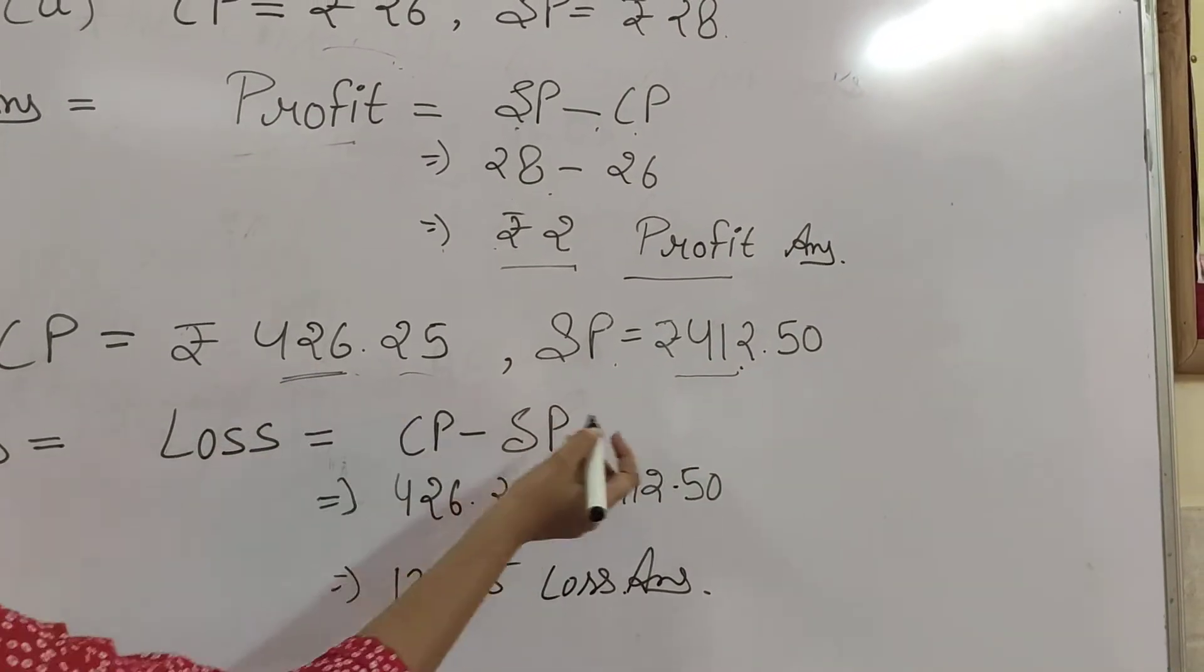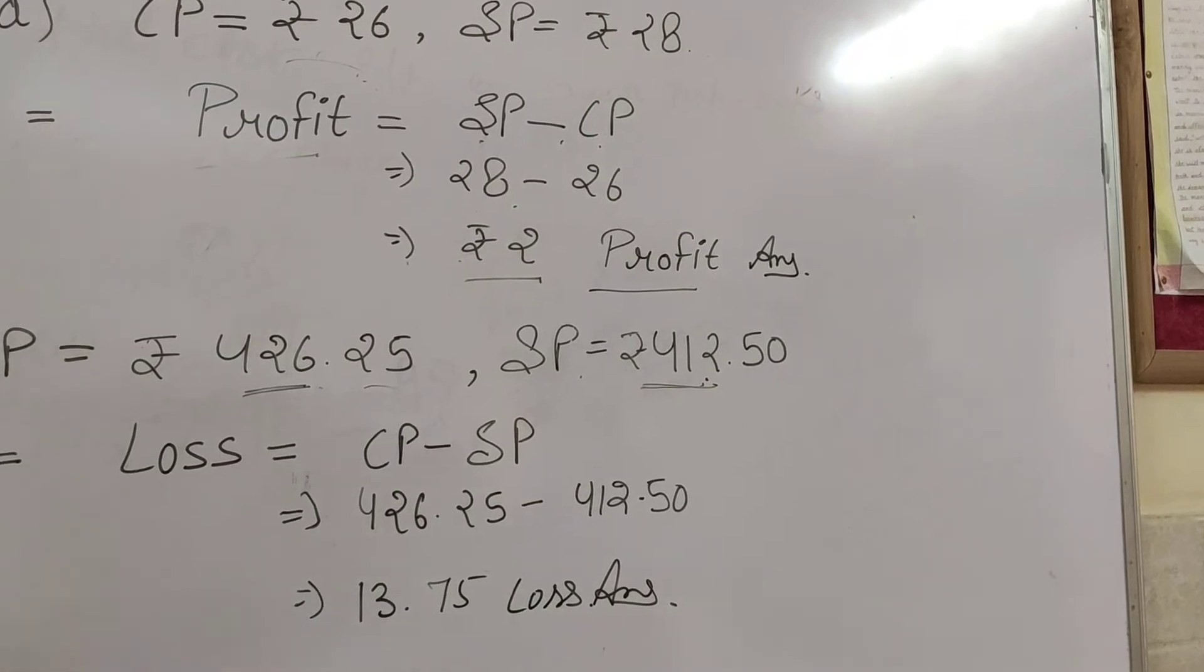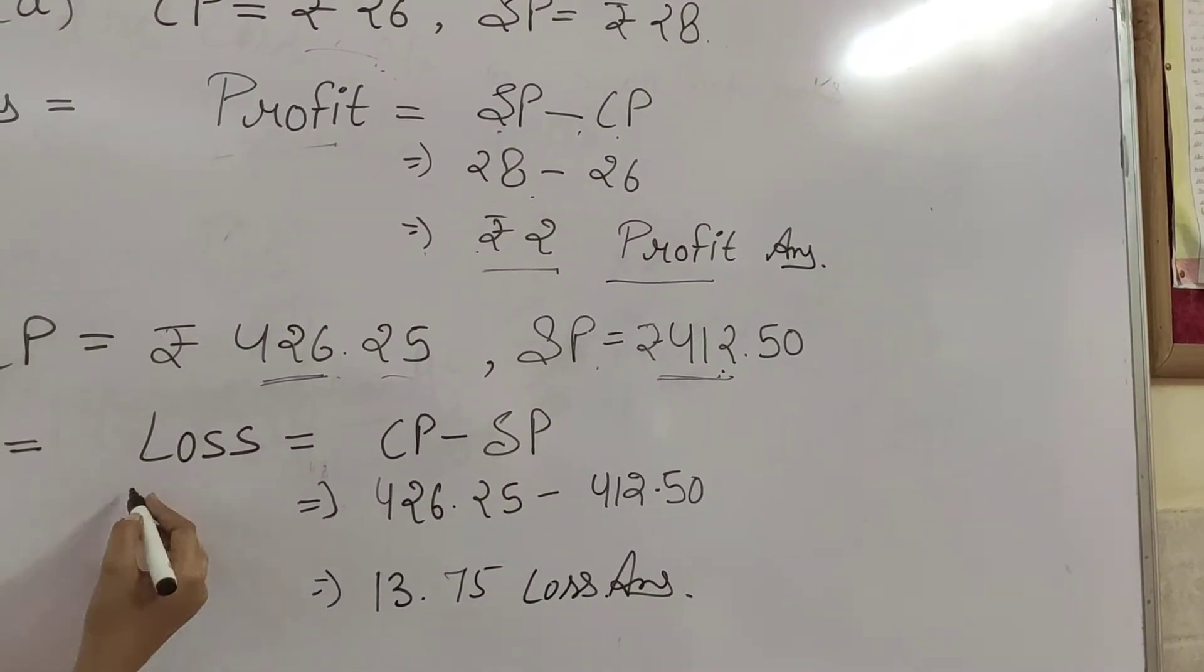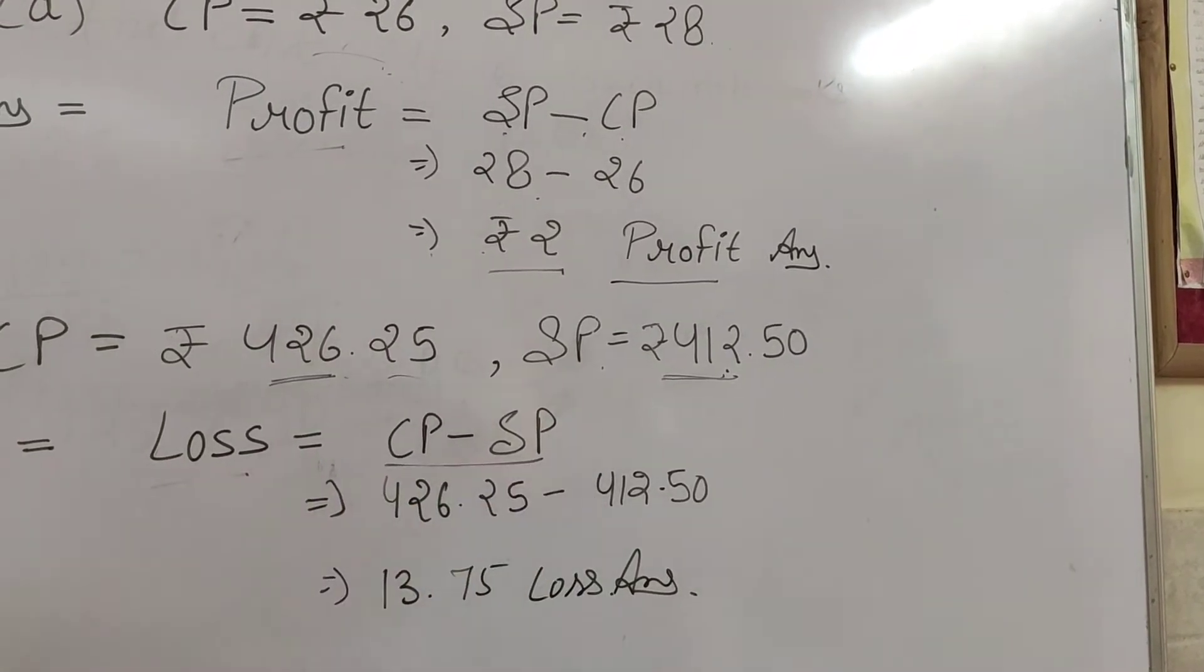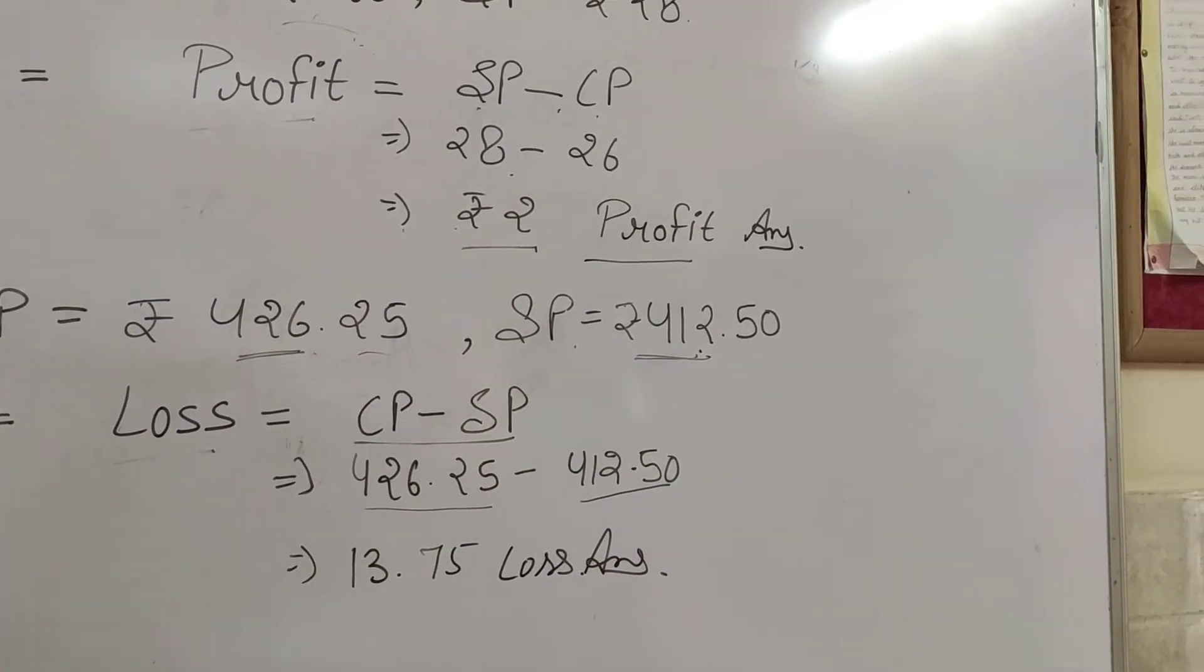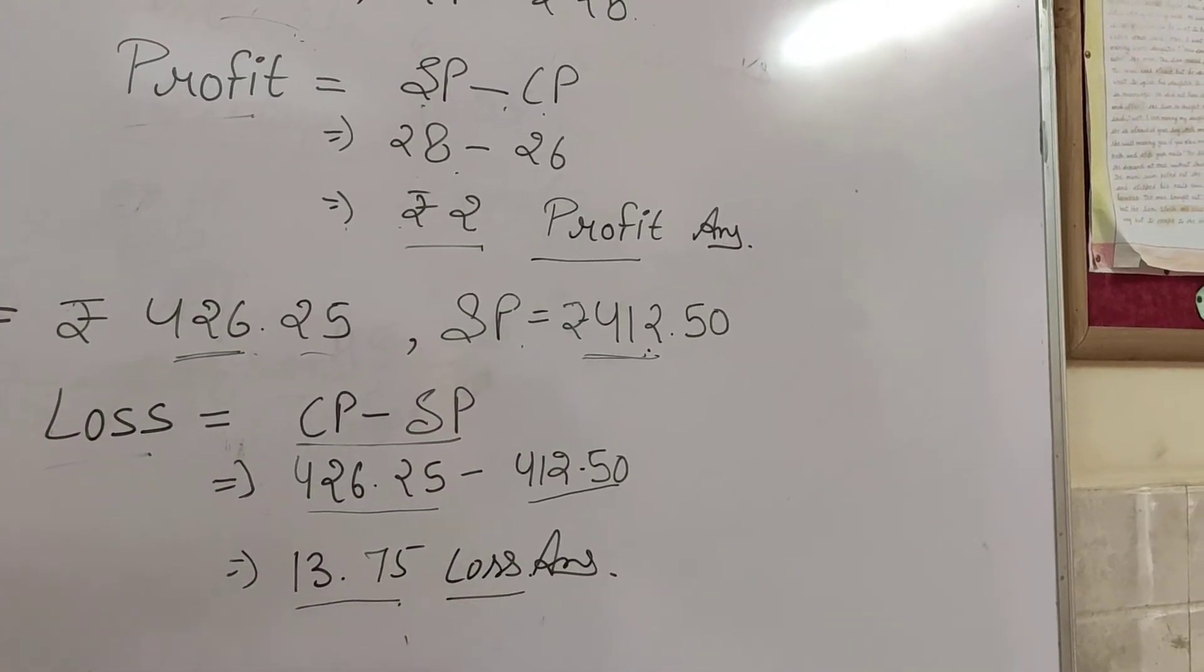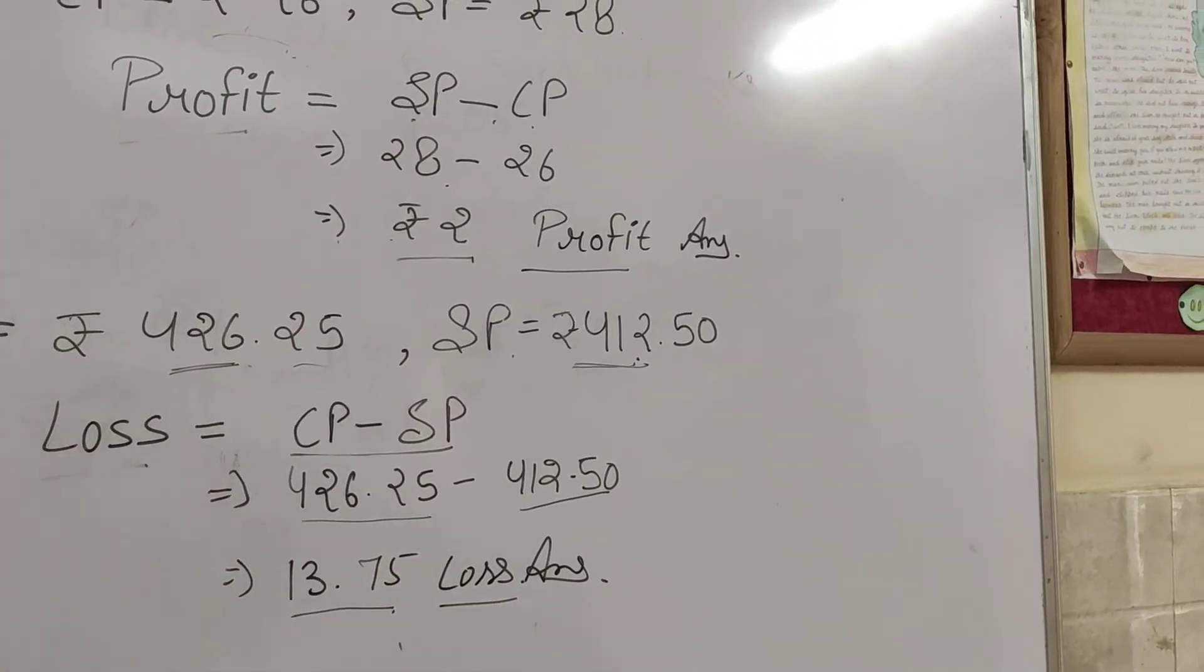We can see clearly that 426 is more than 412. So SP is less than CP, which means there is a loss. The loss formula is CP minus SP. So 426.25 minus 412.50 gives us ₹13.75 loss.